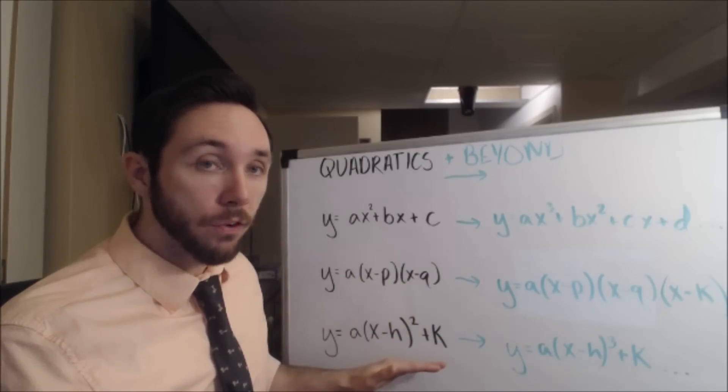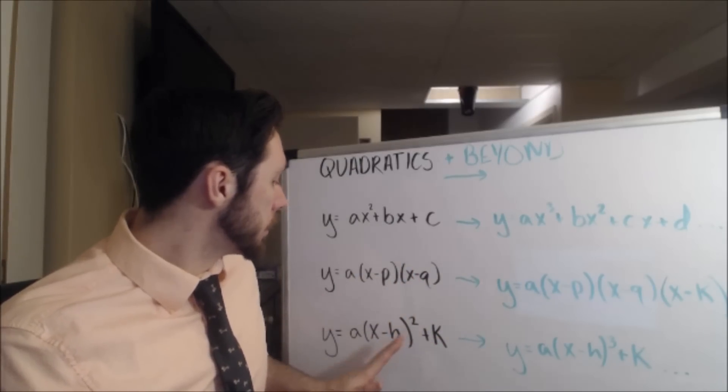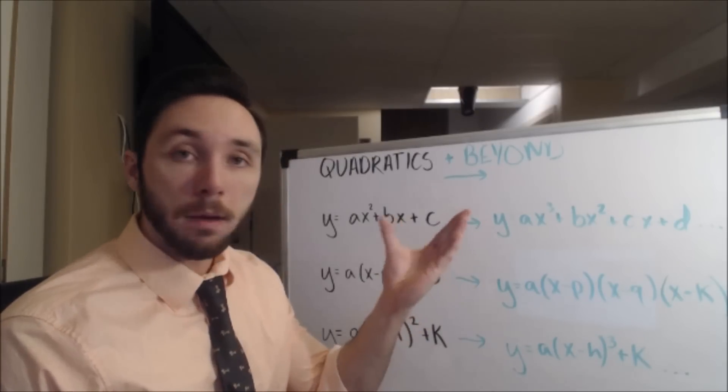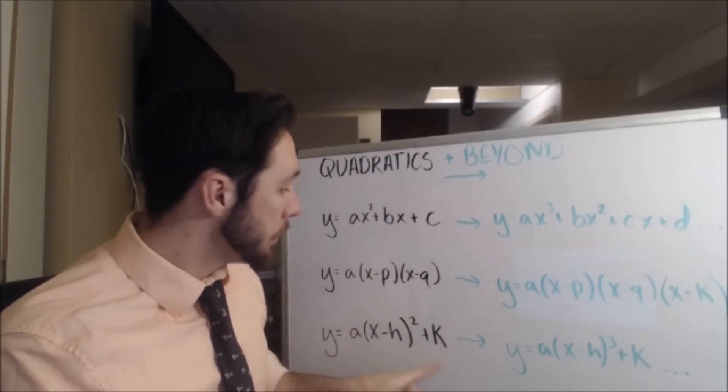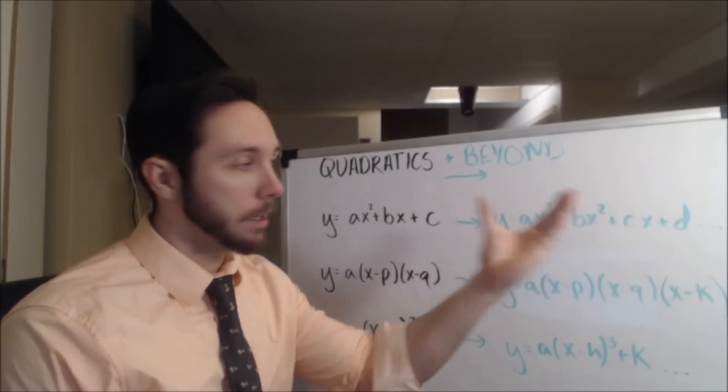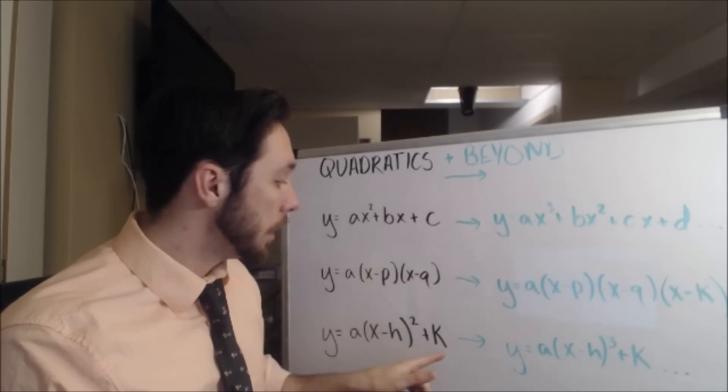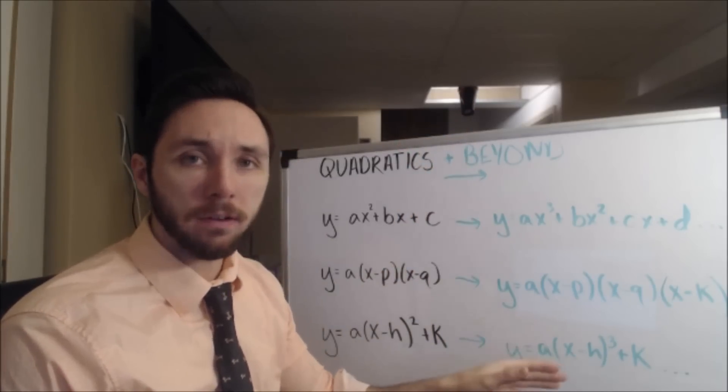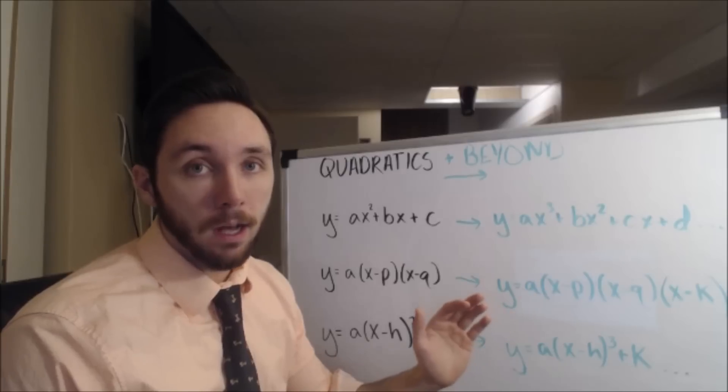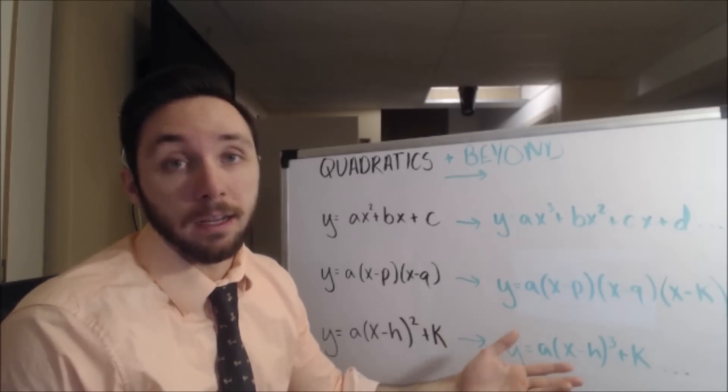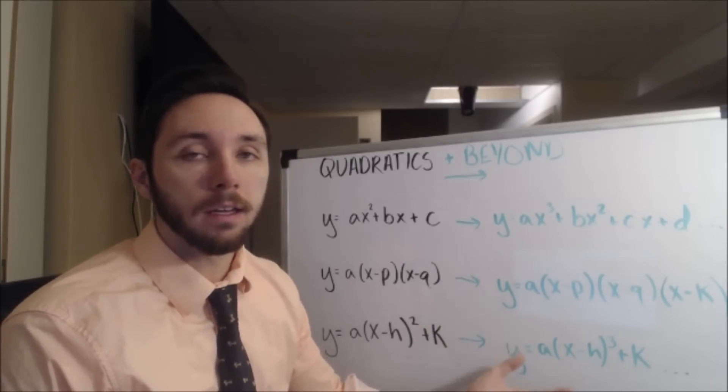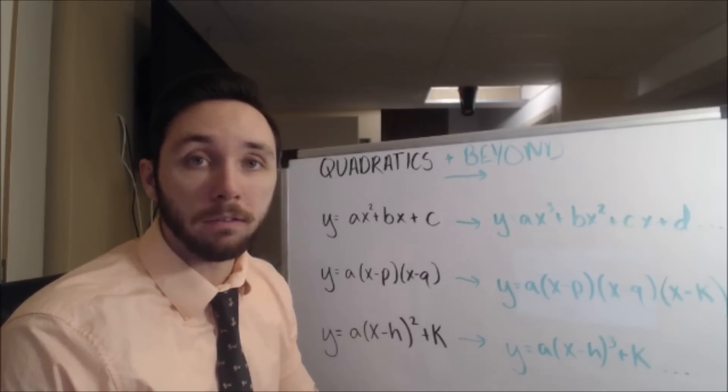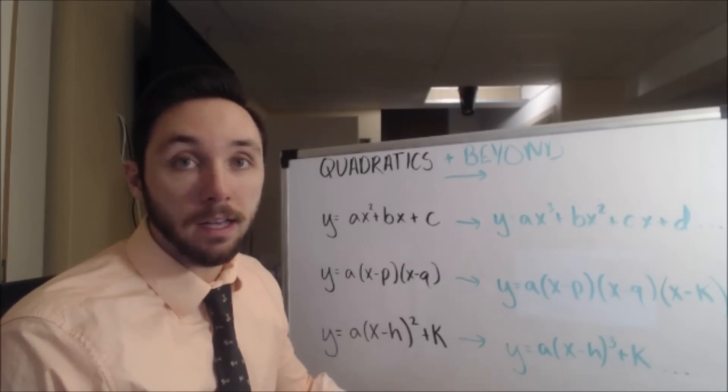The last one here is vertex form of quadratics. This allows you to manipulate certain values. So if you manipulated the a value, it might make the parabola skinnier or wider. If you manipulate the h value, that will apply a horizontal shift to it. And if you manipulate the k value, that will apply a vertical shift to the parabola. And this general idea can be applied to a lot of different types of polynomials, any polynomial really. And it goes even beyond that. You can apply that to cubic roots, square roots, absolute values, any parent function. This general idea is in play with that.